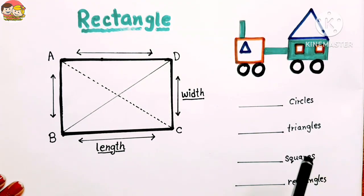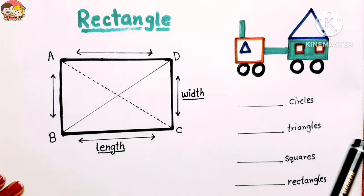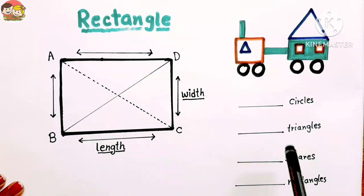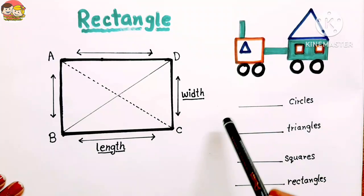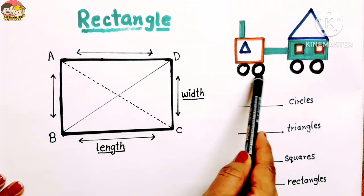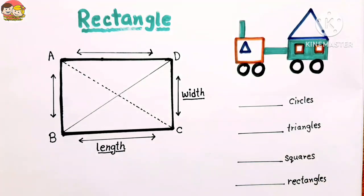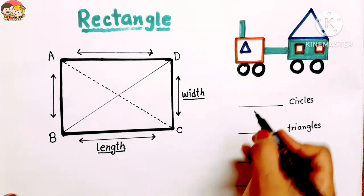So let's count. How many circles, triangles, squares, and rectangles are there in this figure? First, circles. How many circles are there? Let's count: 1, 2, 3, 4. So there are 4 circles. Let's write.